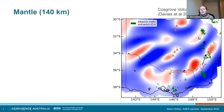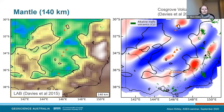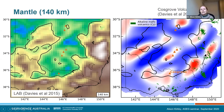The lithosphere-asthenosphere boundary LAB depth and the 140-kilometre contour can be overlaid on the resistivity model — essentially where the LAB intersects the resistivity model. There's a good correspondence between these conductors and variations in lithospheric thickness. Some of these conductors may be associated with entrainment of material associated with movement of the Australian lithosphere over the asthenosphere.